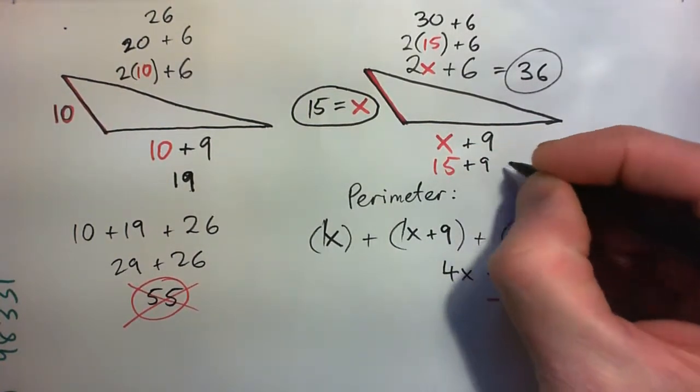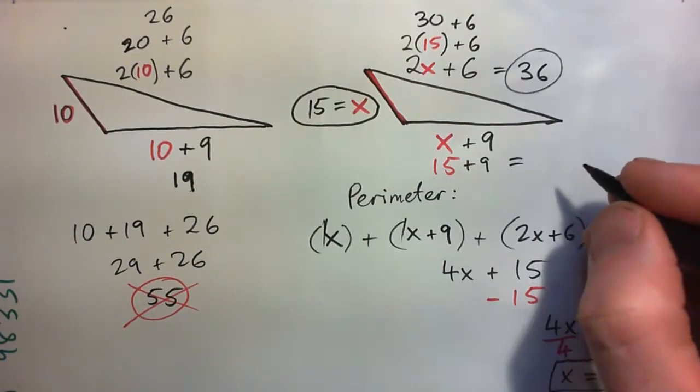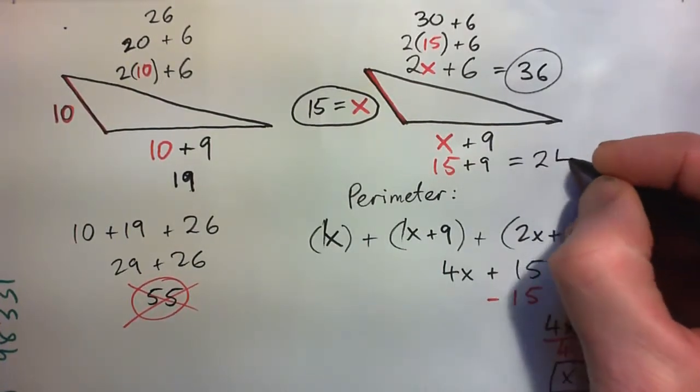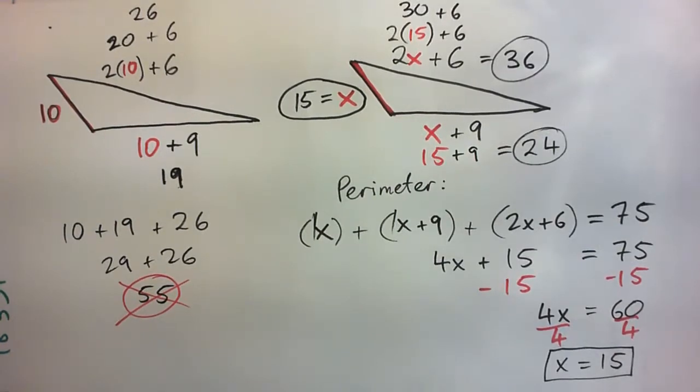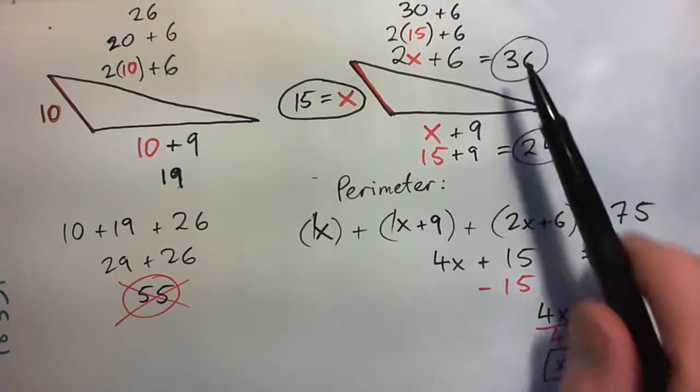15 plus 9, isn't it? Which is 24. So the side lengths are what? 15, 24, and 36.